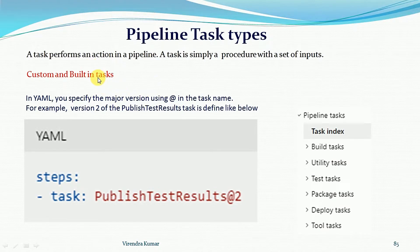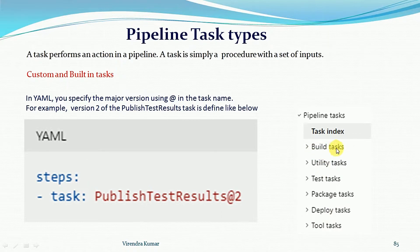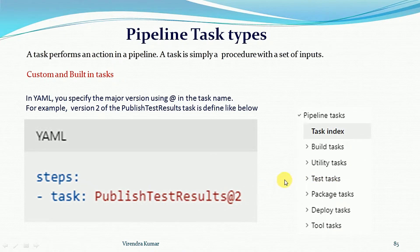Here you can see some examples of pipeline tasks: build task, utility task, test-related task, package task, deployment task, and tool task. When you want to perform build actions, you can choose an already available build task or define your own. For example, Maven is a build management tool, so you can select the Maven build task. A test task is used when you want to publish test results.